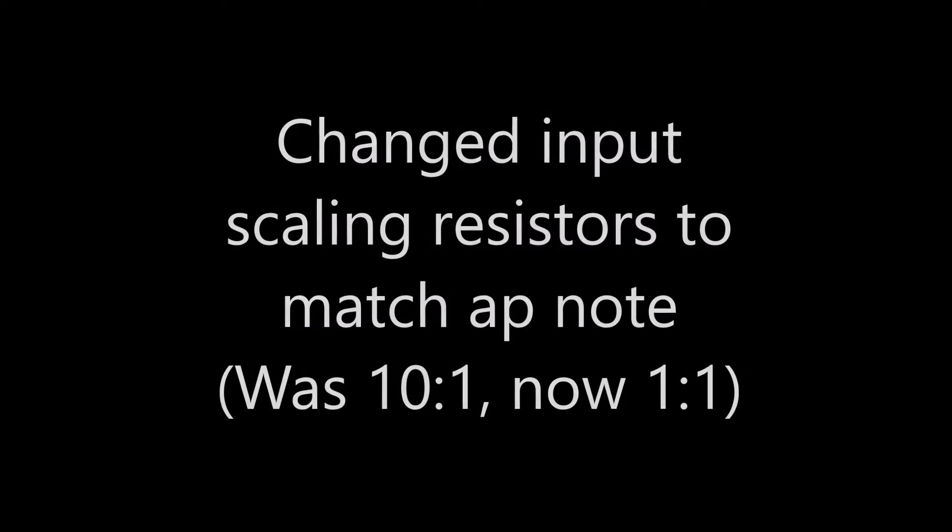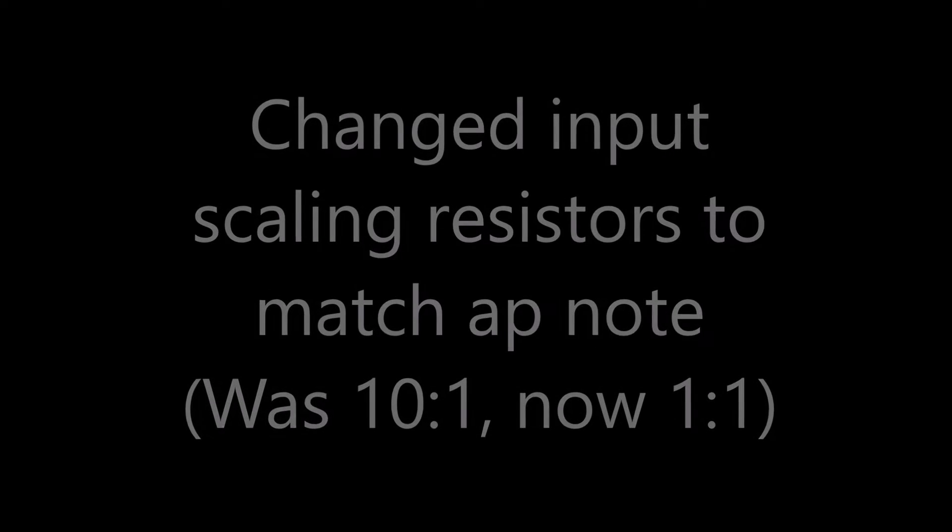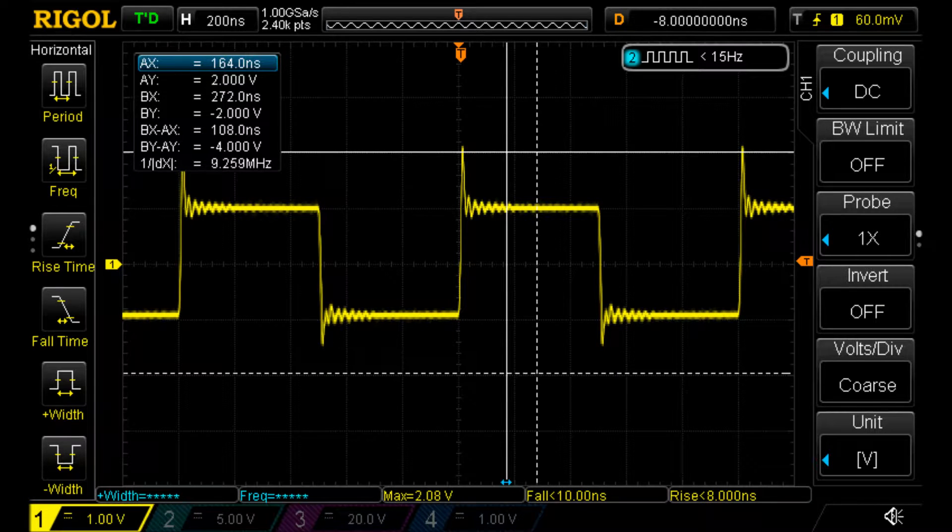In an attempt to chase down the overshoot problem, I changed the input scaling resistors to match the app note. The overshoot and undershoot were still present. This is a 1 volt, 1 megahertz input and output voltage. This is with an input voltage of 2 volts peak to peak, which is on the output as well, but still ringing.